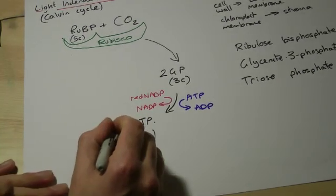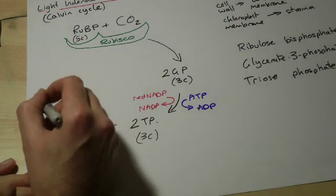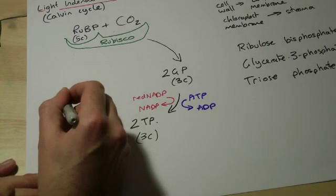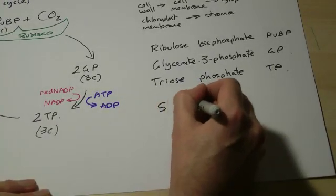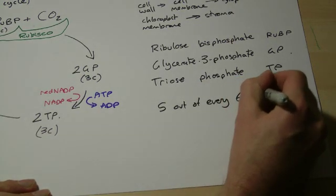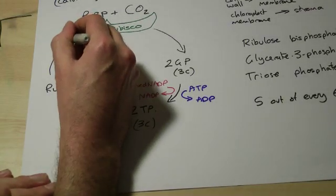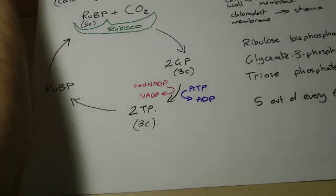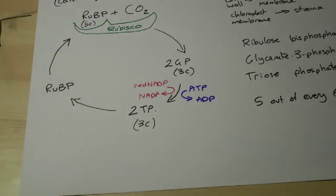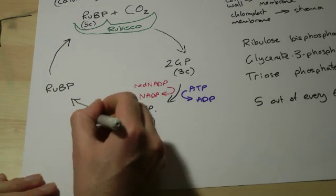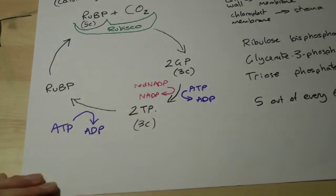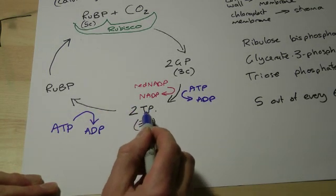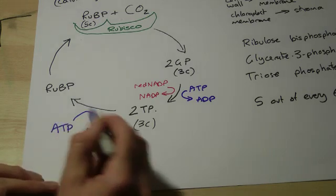The triose phosphate is then converted into ribulose bisphosphate. In fact, five out of every six triose phosphates are used to regenerate ribulose bisphosphate, and then we've completed the cycle. We also require ATP at this stage — in other words, triose phosphate is phosphorylated to RuBP, so we need ATP again.